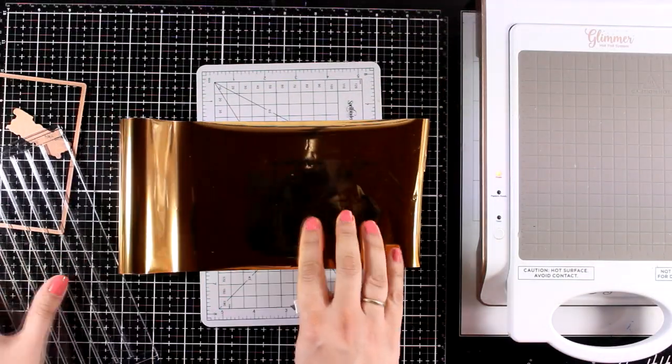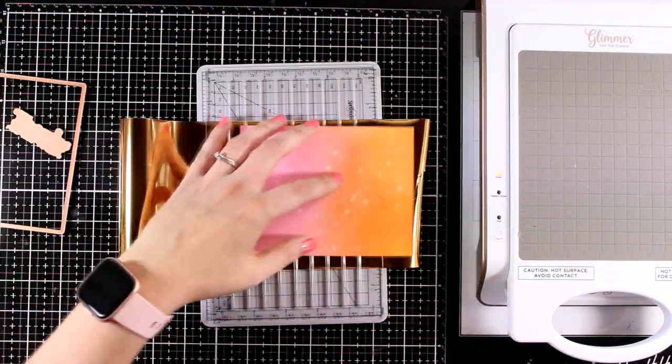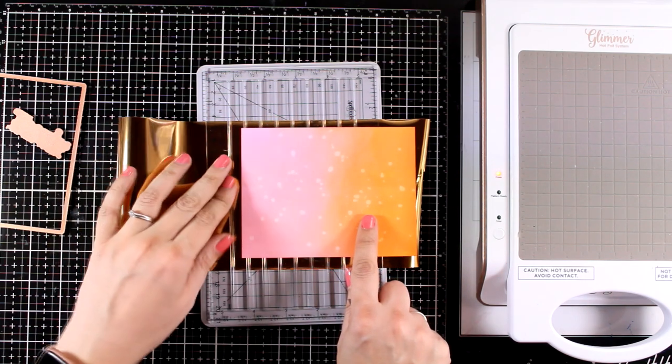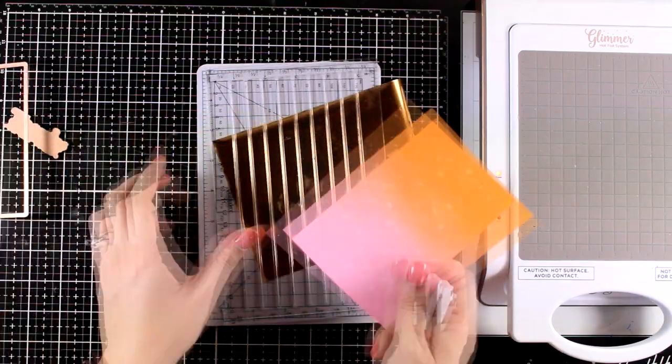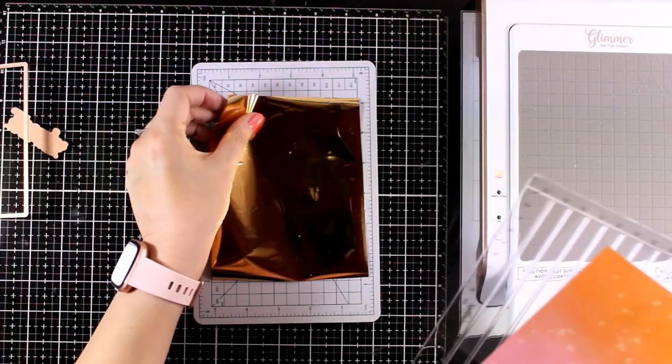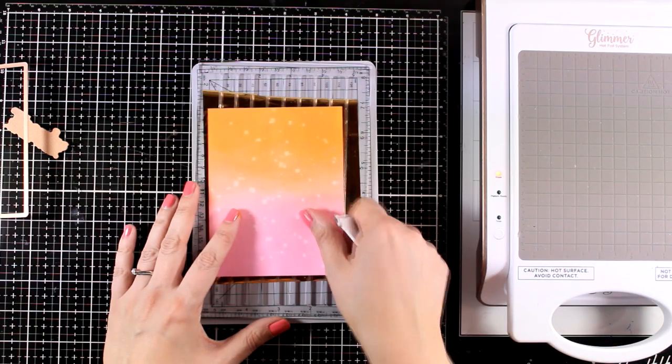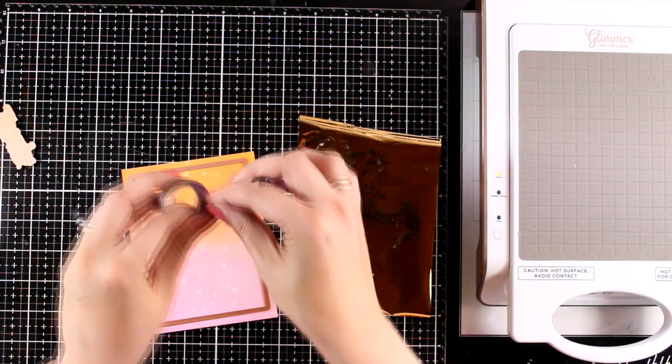For my foil I decided to go with gold and you will see that gold on top of Kitsch Flamingo is absolutely stunning. I'm using my little trimmer by Spellbinders which is very handy when it comes to foiling, and this way I can easily measure and not waste any foil at all.